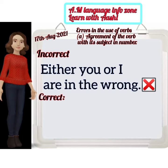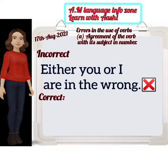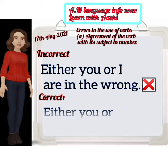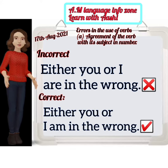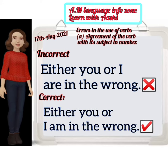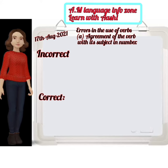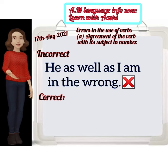Next: 'Either you or I are in the wrong' — incorrect. The correct form is: 'Either you or I am in the wrong.' Then: 'He as well as I am in the wrong' — this is the correct form.